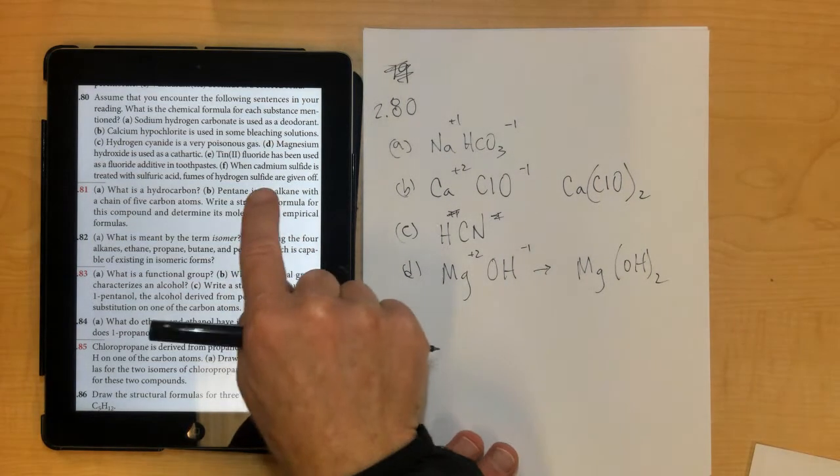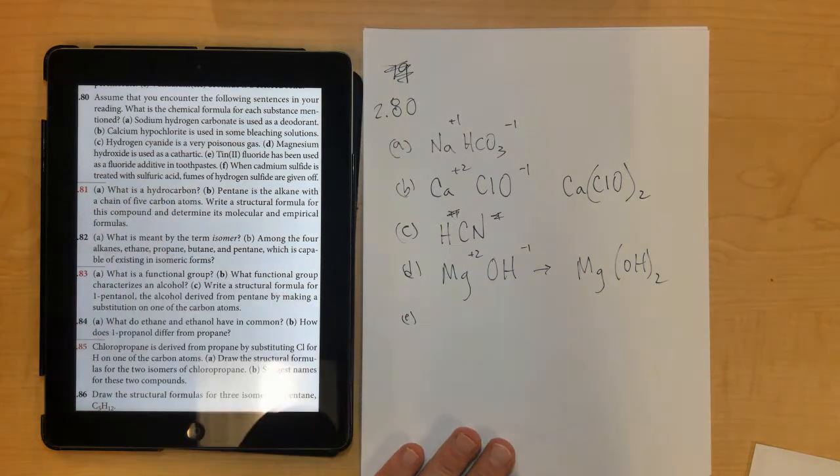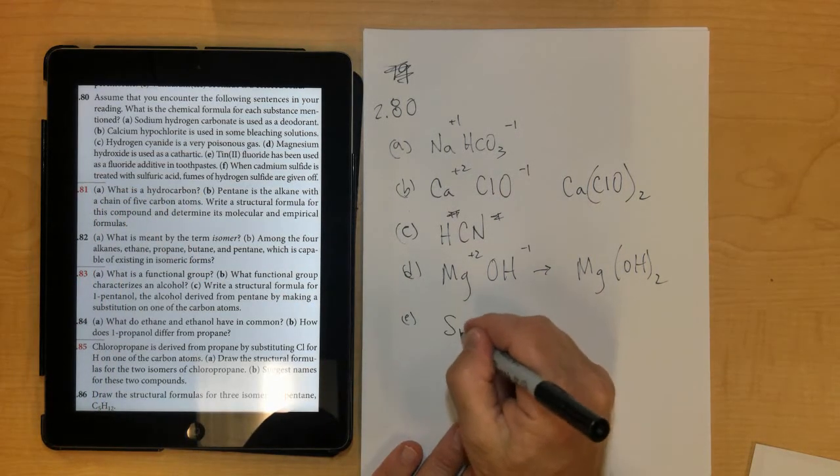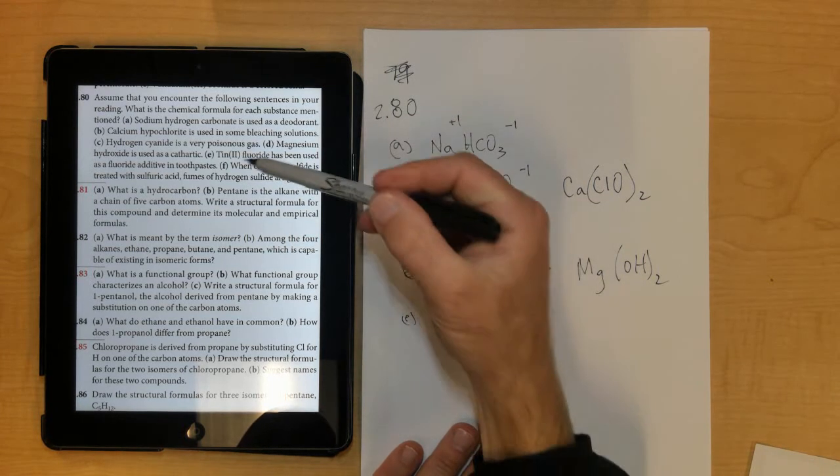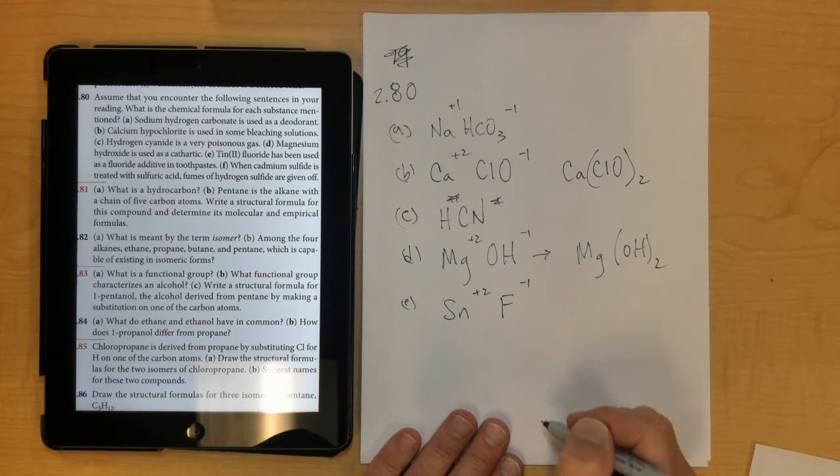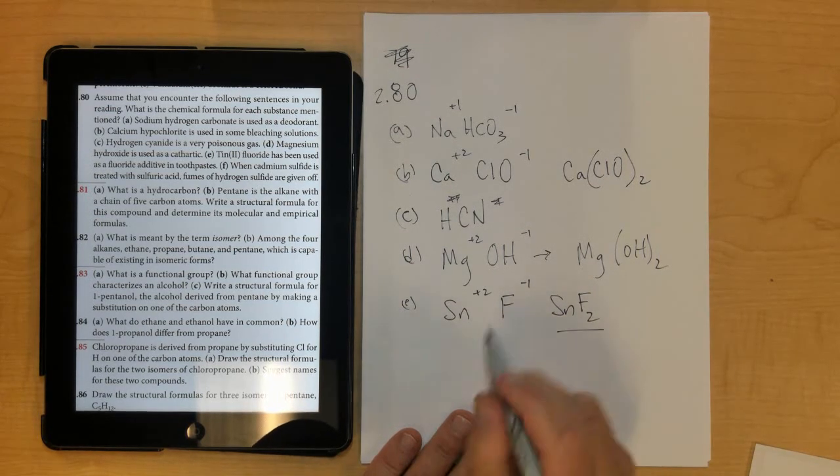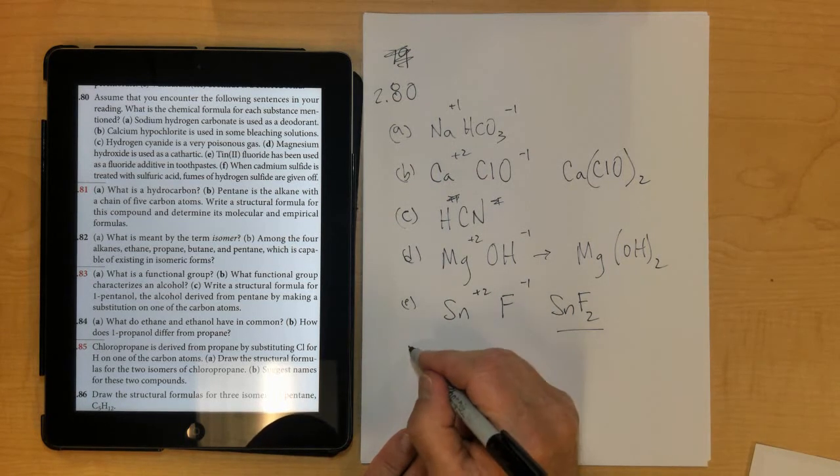And then letter E, tin 2 fluoride has been used as a fluoride additive in toothpaste, so tin 2 fluoride would be Sn, and since it says 2, that means it's positive 2, and then fluoride would be F, that would be negative 1, so that means it's SnF2 as tin 2 fluoride, so you have two fluorides for every one tin.